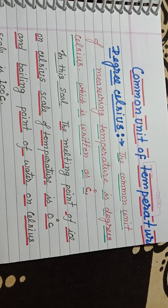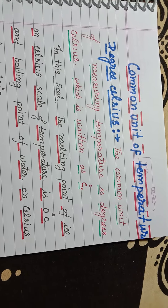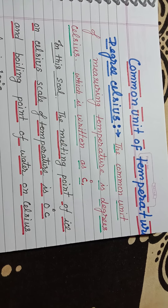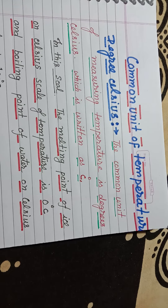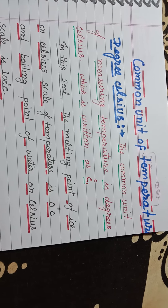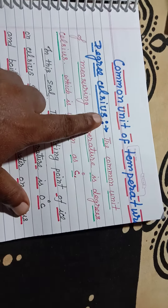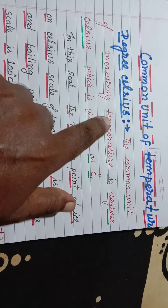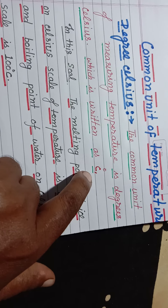Temperature measurement ka common unit — the common unit of measuring temperature is degree Celsius, which is written as °C.